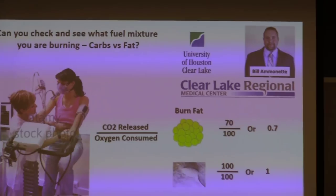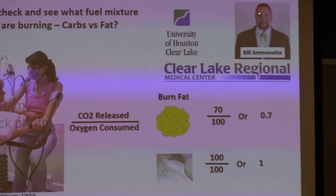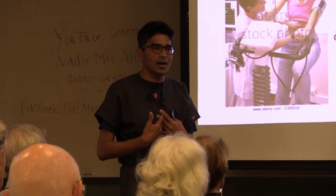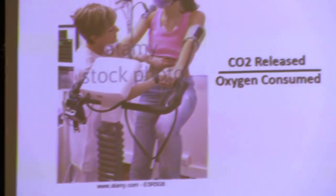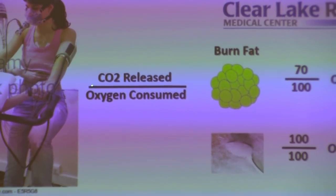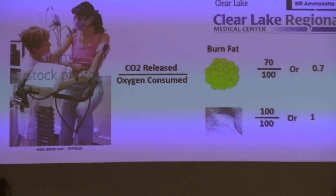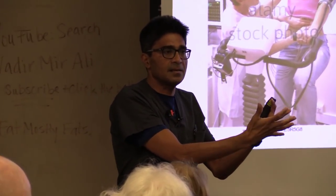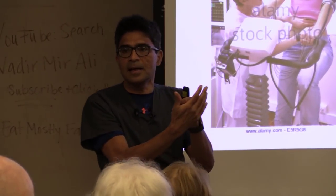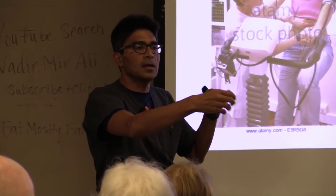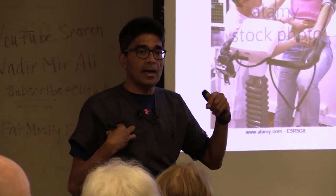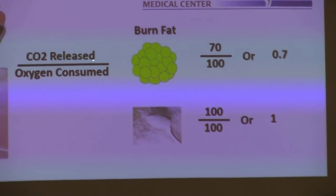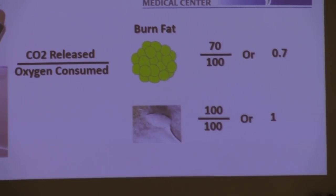Bill Amonet at Clear Lake Hospital and the University of Houston Clear Lake are doing a joint project. Bill Amonet can measure the amount of carbon dioxide someone releases compared to the amount of oxygen consumed, by putting a mask on them. If someone is adapted to a low-carb high-fat diet and able to burn fat, they only put out 70 parts of carbon dioxide compared to 100 parts of oxygen consumed — a ratio of 0.7.